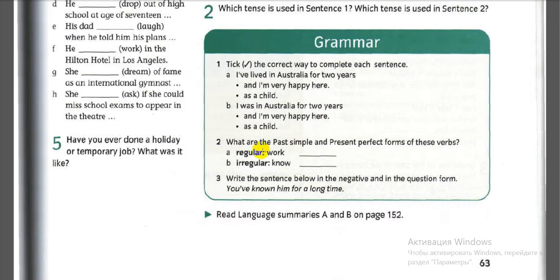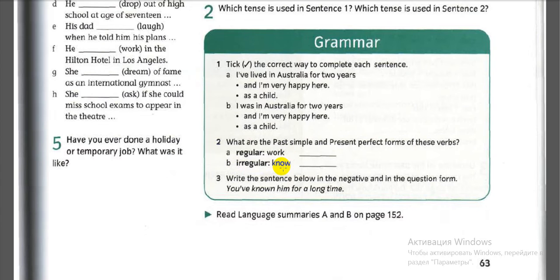What are the past simple and present perfect forms of these verbs? Regular verbs — for example 'work': past simple is 'worked,' present perfect is also 'worked,' because it's regular — we just add -ed. Irregular verbs: for example 'know' — past simple is 'knew,' present perfect is 'known.'